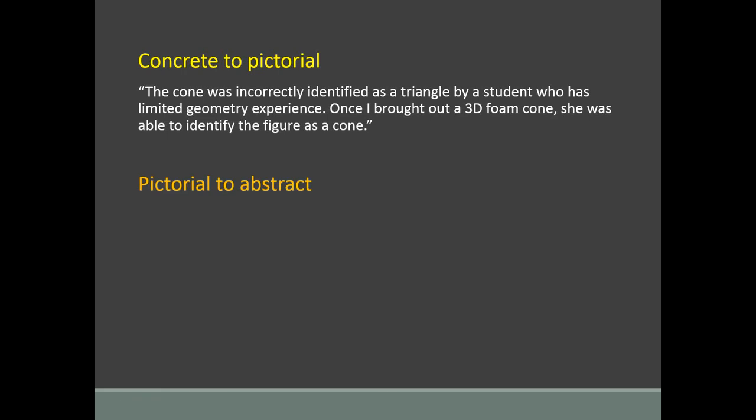Moving from pictorial to abstract — from a picture to an abstract idea — some students said that looking at the formulas is like reading Braille: it just doesn't make any sense to them. We also differentiated moving from abstract to very abstract, getting even deeper into abbreviations and terms that are divorced from meaning for our students. There's a lot to talk about with the formula sheet — for example, where's good old length times width times height for volume? Students don't have to stay married to the formula sheet, but it's good for them to explain what's on it and the connections between formulas.